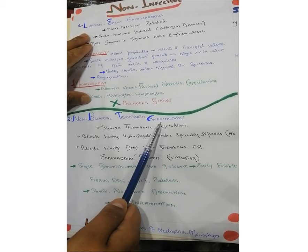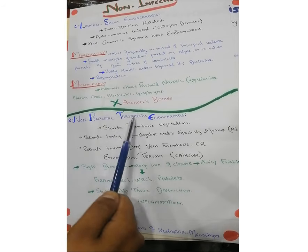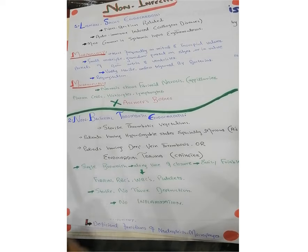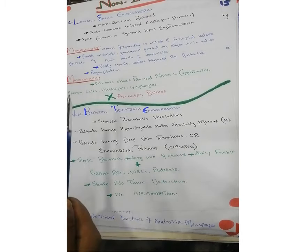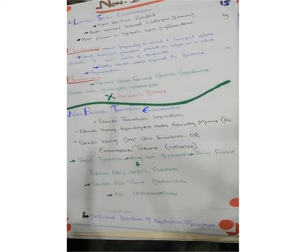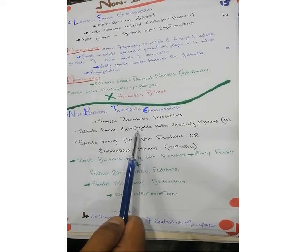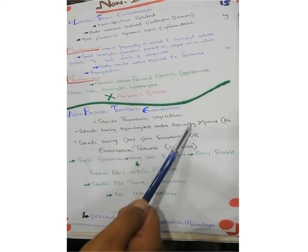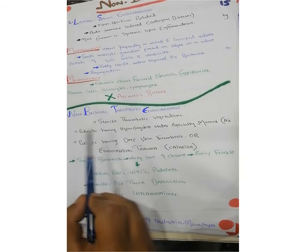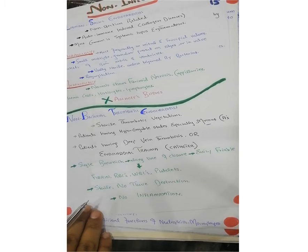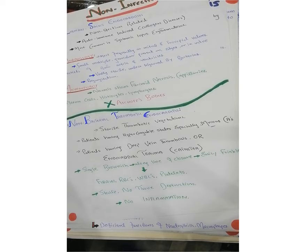The second non-infective type is non-bacterial thrombotic endocarditis. As the name indicates, it is non-bacterial with presence of thrombus — these are sterile thrombotic vegetations. Patients with hypercoagulable states have increased chances of developing thrombus or emboli. Some patients with carcinomas of the mucous membranes of different organs also have increased chances of developing non-bacterial thrombotic endocarditis. When there is a problem with the mucous membrane, there is disturbance in the endocardial lining, leading to thrombus formation.